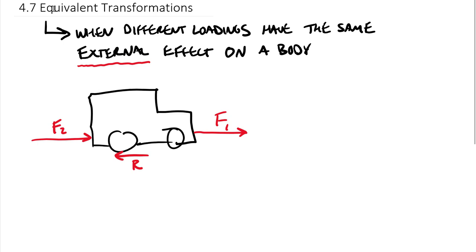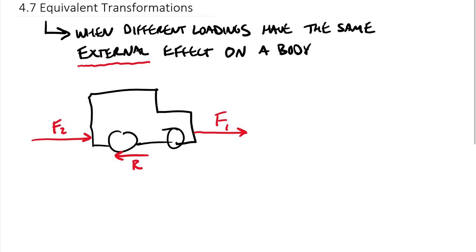F1 and F2 will have exactly the same external effect on this body — pick either one. But their internal effect could be very different. If you pull on F1 you might pull off the front bumper; if you push on F2 you might collapse the rear. The tension and compression manifesting through the frame will be very different between pulling and pushing. So these are externally equivalent but internally different. We have an entire chapter devoted to internal effects: internal tension, compression, bending moment, and shear.